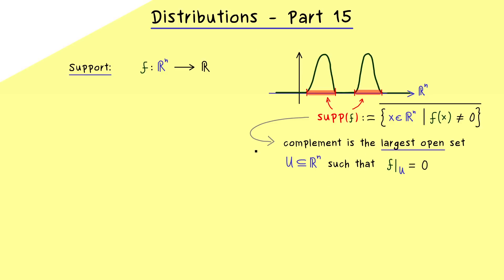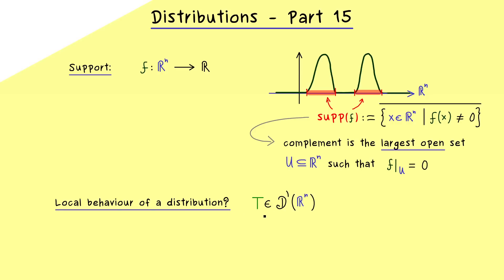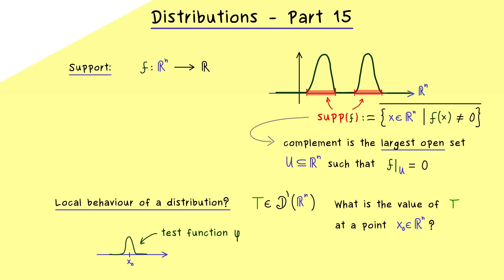This approach makes sense because for distributions we cannot say what happens at a given point. However, by using test functions we can still say something about the local behavior of distributions. So let's take a distribution T, which is a linear functional defined on the test functions. One could ask what the value of T is at a given point x₀. Your first answer might be that this does not make sense, but we can give some meaning to this question.